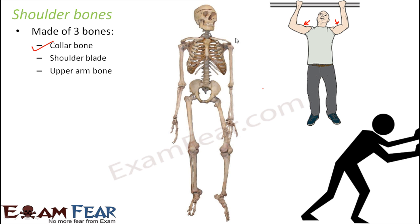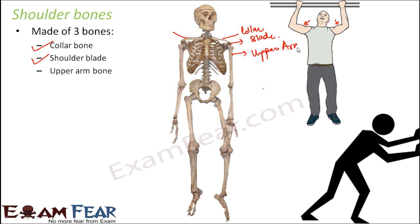Collar bones are present here — so these are the collar bones. The next one is the shoulder blade, which is this part where it gets joined to your arm. That is the shoulder blade. And then the third part is your upper arm, which as we discussed is made up of a single long bone. So this makes your shoulder bones.